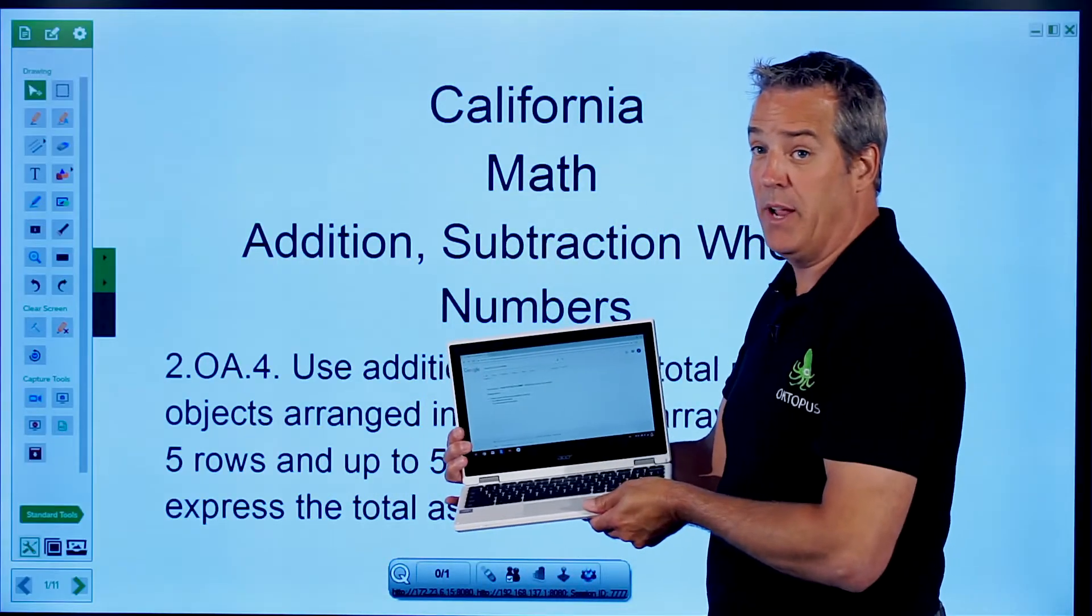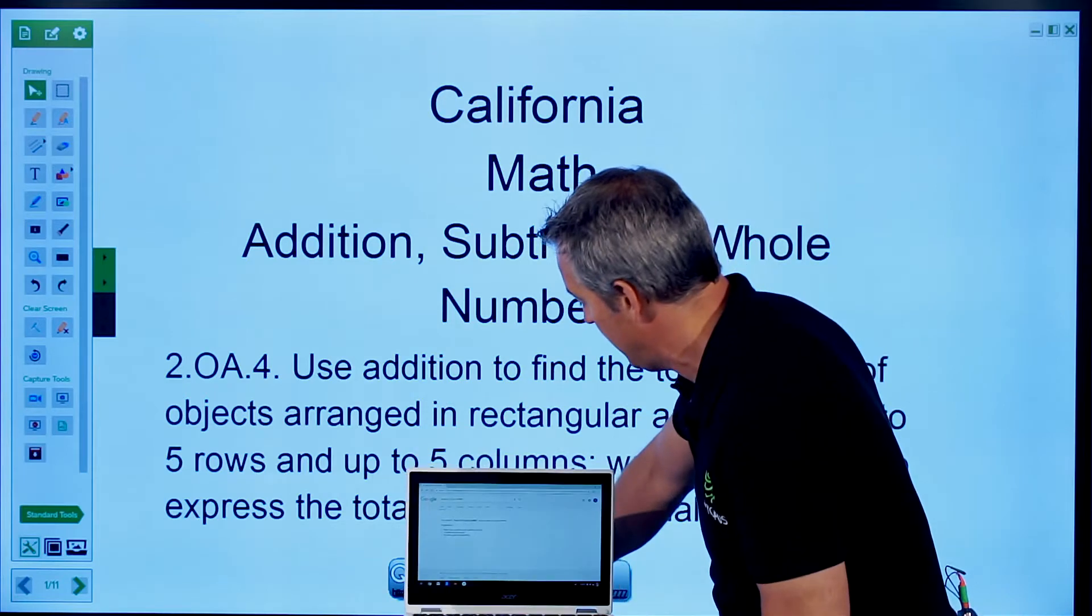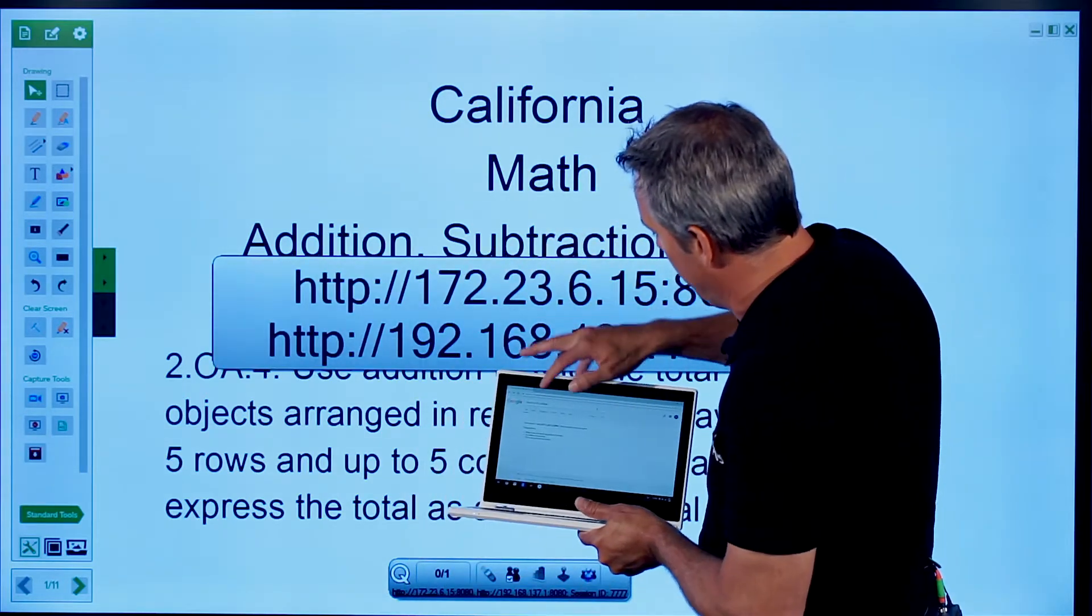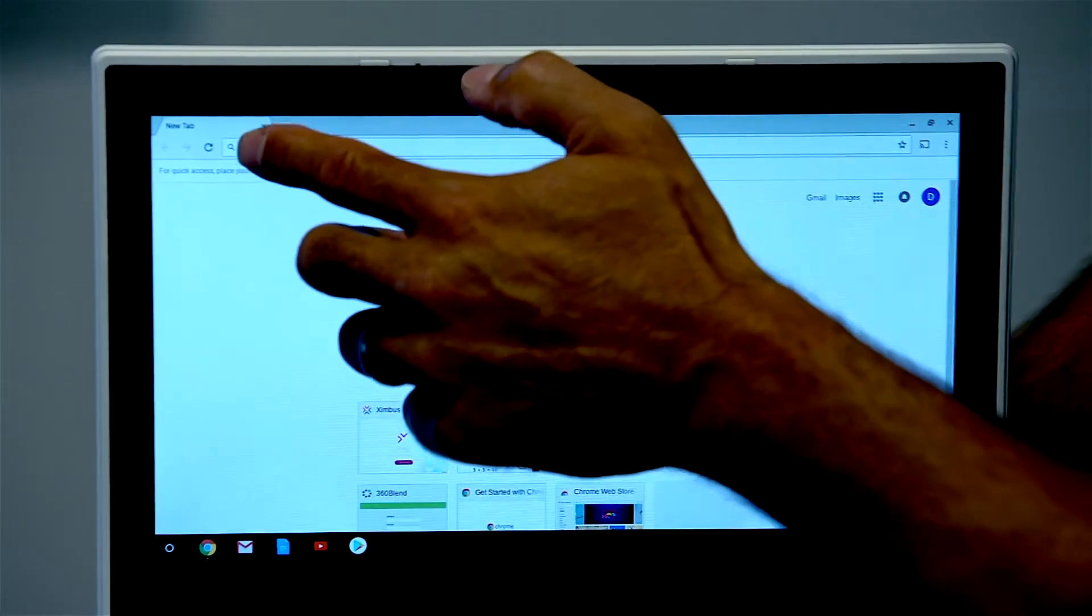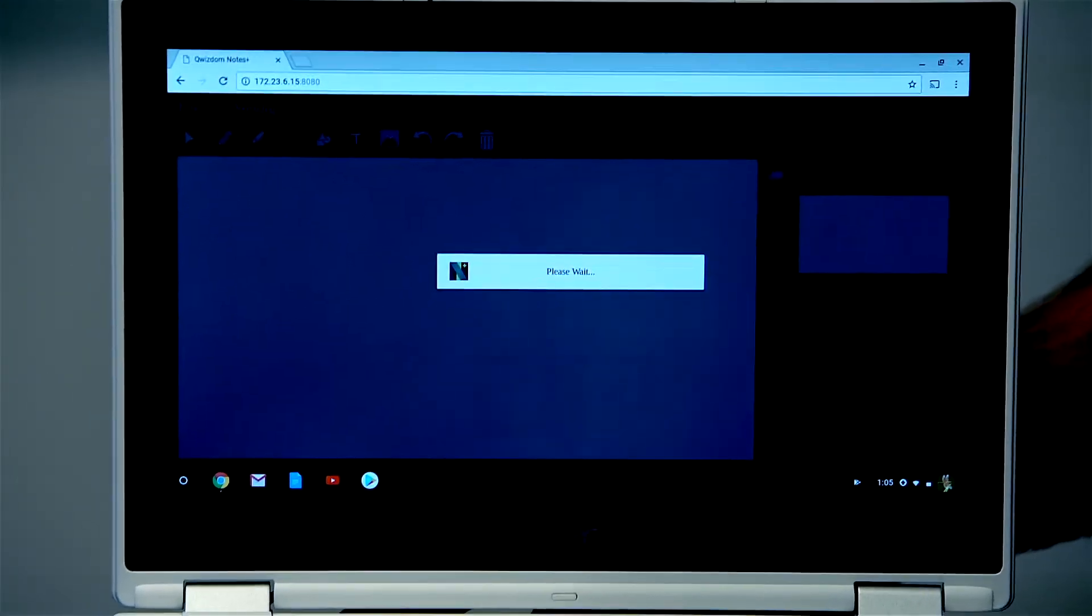If we're doing this from a Chromebook or a web browser it's a slightly different process. It can list the IP address that they can join through. They can type in the address, the IP address there and join the session that way.